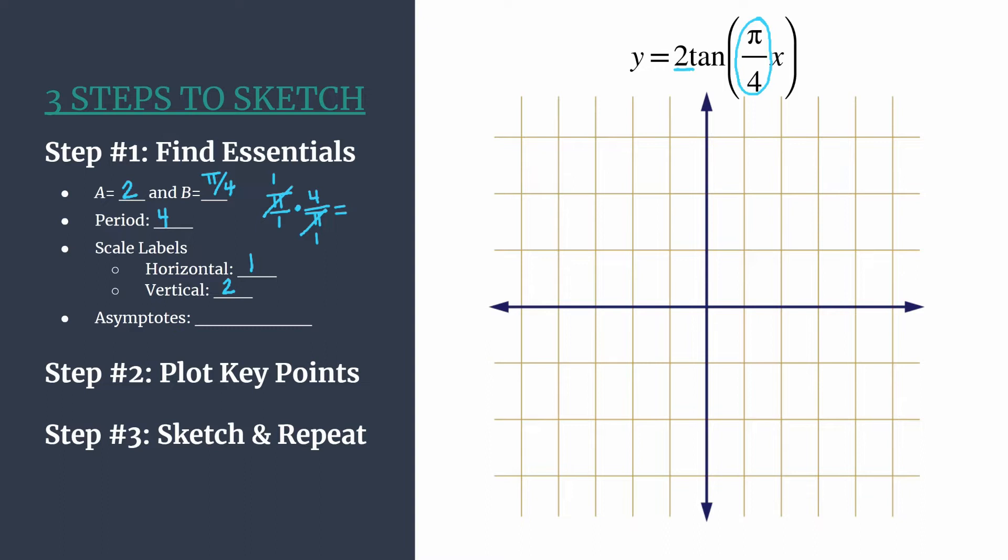And our last essential, the asymptotes. So remember our equation is x equals pi over two B plus pi over B times k, where k is an integer. Remember, this is our shorthand for that. So let's just substitute in B or pi over four.